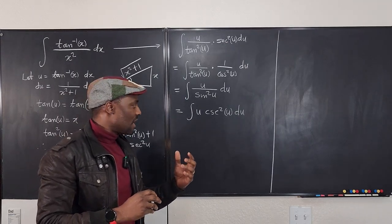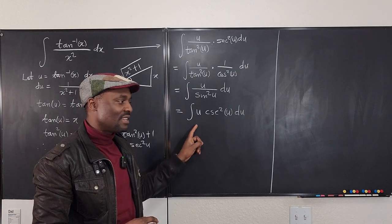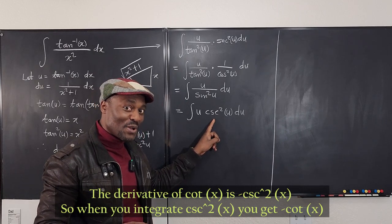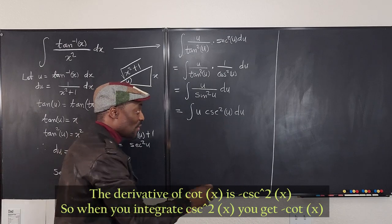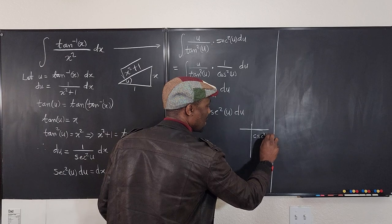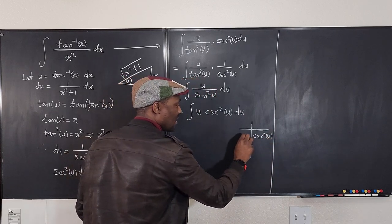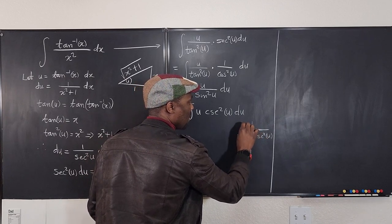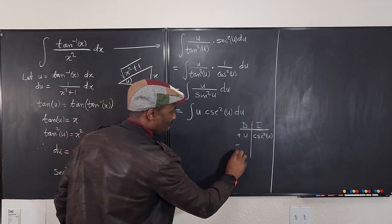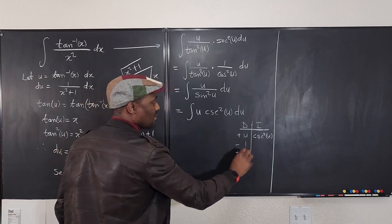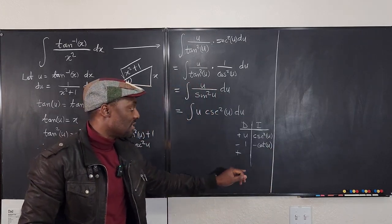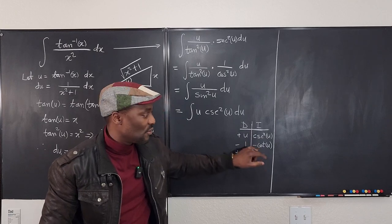Let's rewrite this as the integral of u · csc²(u) du and use the DI method. We differentiate u and integrate csc²(u). Remember that the derivative of cotangent is negative cosecant squared, so the integral of csc²(u) is negative cotangent. Differentiating u gives 1, and integrating csc²(u) gives −cot(u).